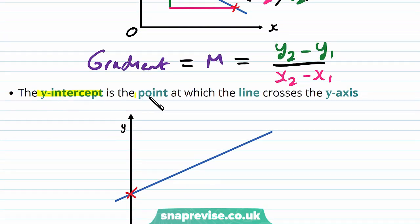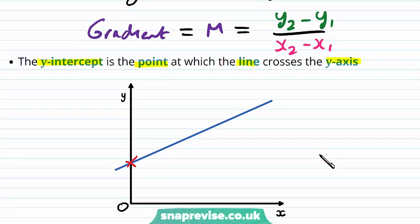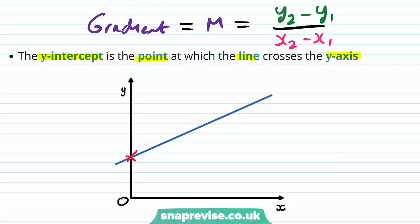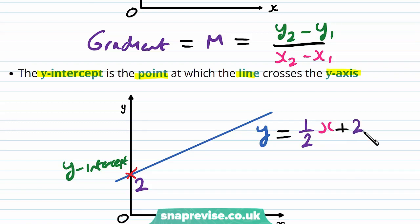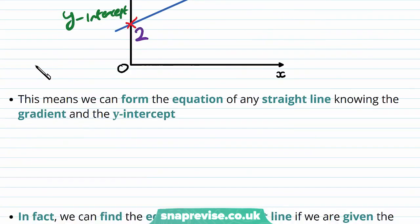Now the y-intercept is the point at which the line crosses the y-axis. So say the line crosses the y-axis at a y value of 2, then this value 2 would be the y-intercept. This may be, for example, the line y is equal to one half x plus 2. This corresponds to a gradient of one half and a y-intercept of 2 — the value on the end not attached to the x. This means that we can form the equation of any straight line knowing the gradient and the y-intercept.